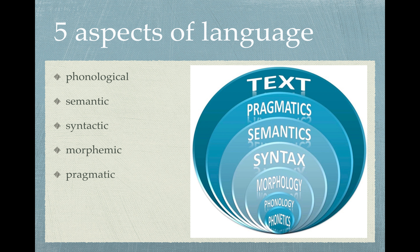If someone is having an issue with language, we have to first determine: is it with their receptive or expressive language? From there, we can break it down into five aspects of language. You need that note page — it has five different boxes: phonological, semantic, syntactic, morphemic, and pragmatic. Phonological language is at the very bottom and it morphs all the way up. We need to know what each of those five aspects means really well.